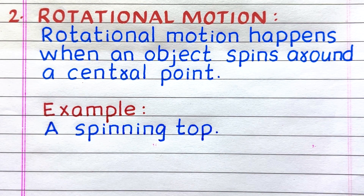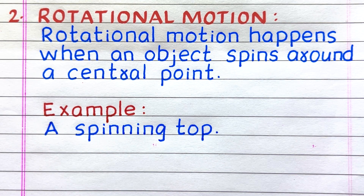Second type of motion is rotational motion. Rotational motion happens when an object spins around a central point. Example: a spinning top.